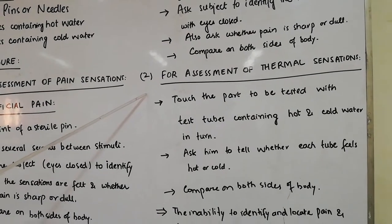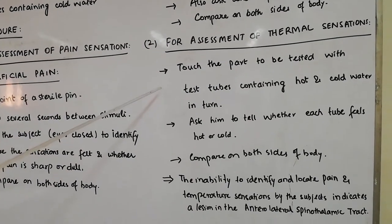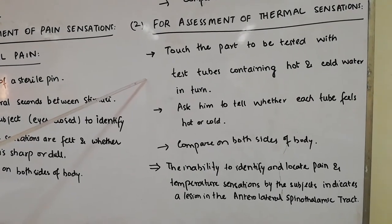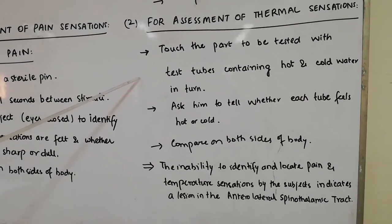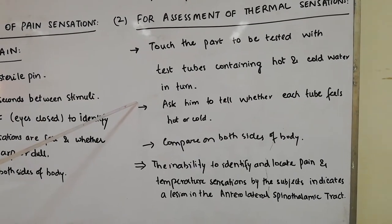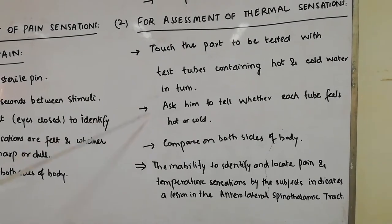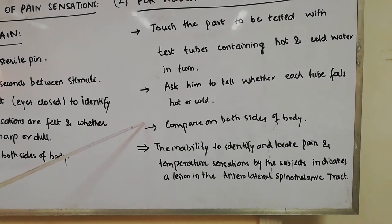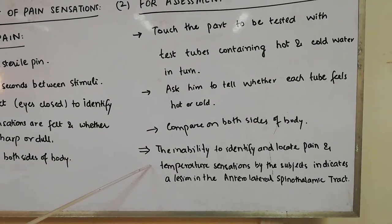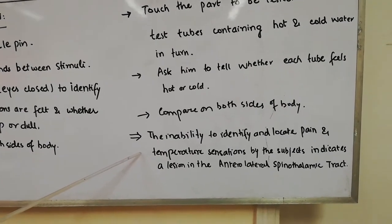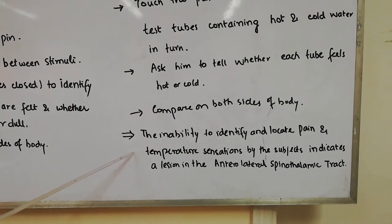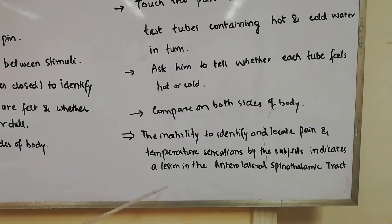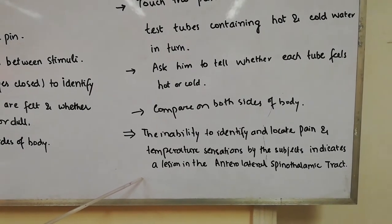For assessment of thermal sensations, touch the part to be tested with test tubes containing hot and cold water in turn. Ask the subject to tell whether each tube felt hot or cold, and compare this on both sides of the body. The inability to identify and locate pain and temperature sensations indicates a lesion or damage in the anterolateral spinothalamic tract.